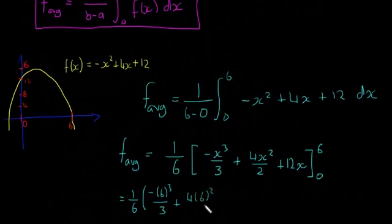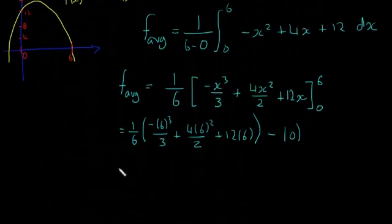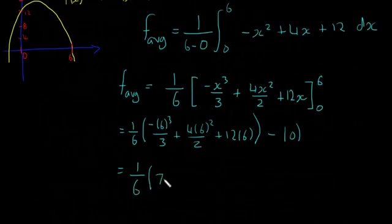And then that's from 6 to 0. So that's going to be equal to 1 over 6 multiplied by -6³/3 + 4(6²)/2 + 12(6) in big brackets, and that's going to be minus zero. So all the zeros are going to go, all the x going to zero. So our answer is 1 over 6 multiplied by 72.